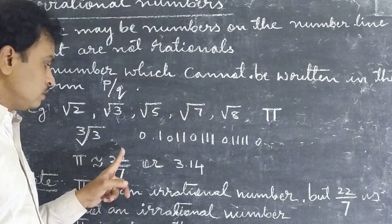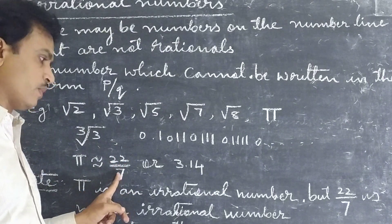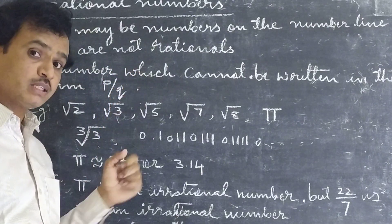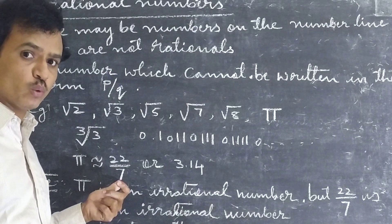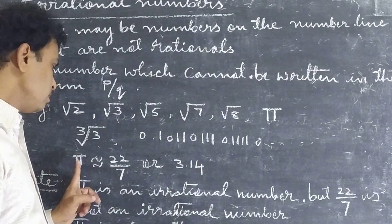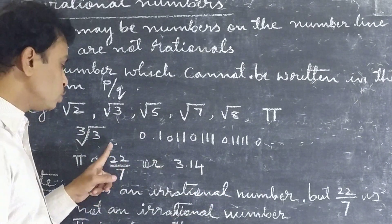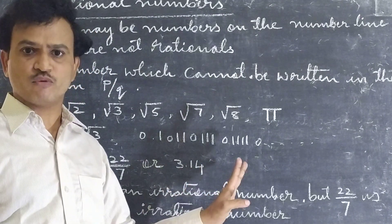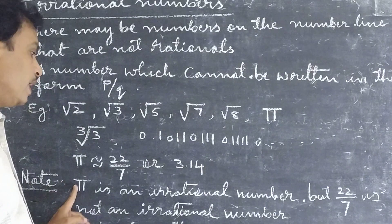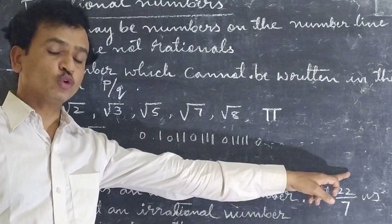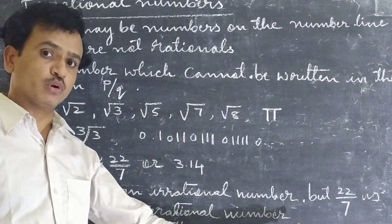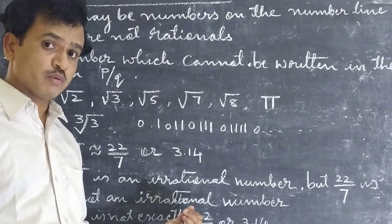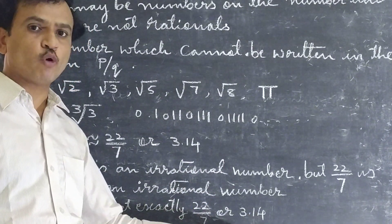Now, pi is approximately equal to 22 by 7. Pi is an irrational number, but 22 by 7 — that is the pi value — is a rational number. It is very important: pi is irrational, but its approximate value 22 by 7, which equals 3.14, is rational. Pi is not exactly equal to 22 by 7 or 3.14.